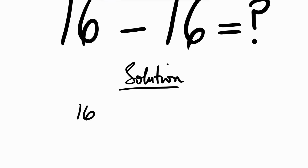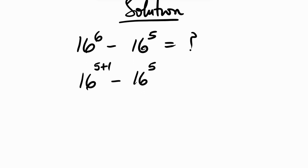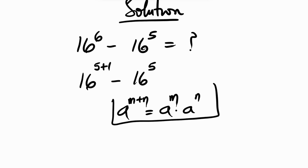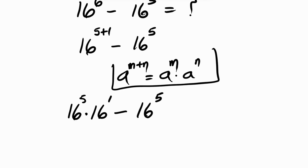We have 16 raised to power 6 minus 16 raised to power 5. Let's rewrite 16 raised to power 6 as 16 raised to power 5 plus 1, minus 16 raised to power 5. We know that a raised to power m plus n equals a raised to power m times a raised to power n, so 16⁵⁺¹ becomes 16⁵ times 16¹, minus 16⁵.